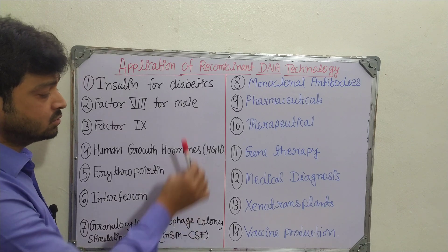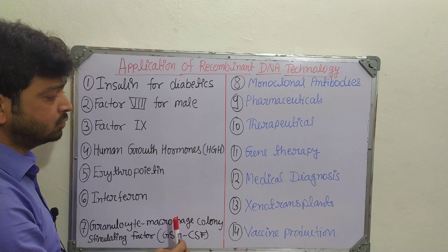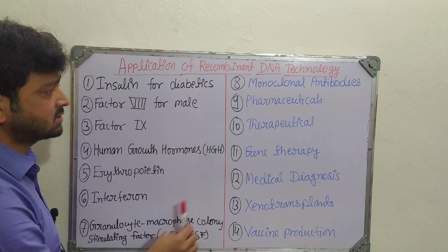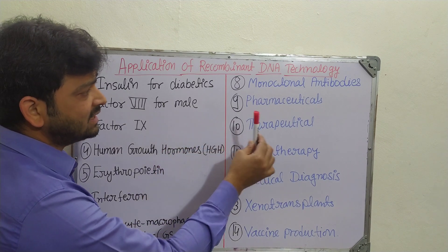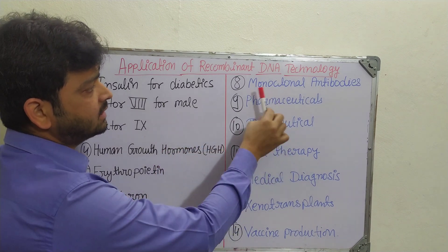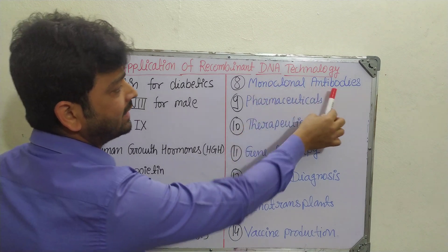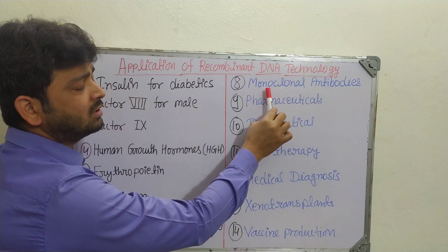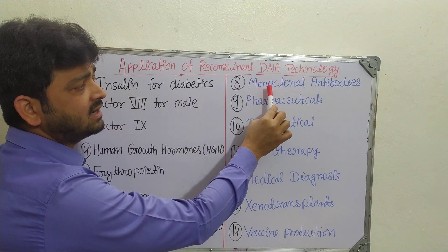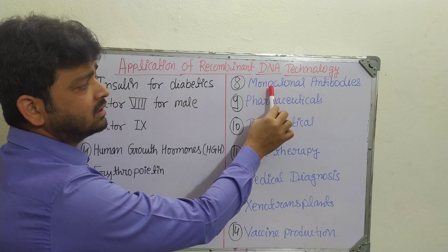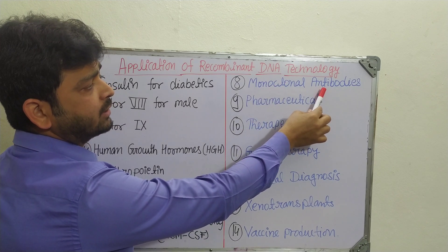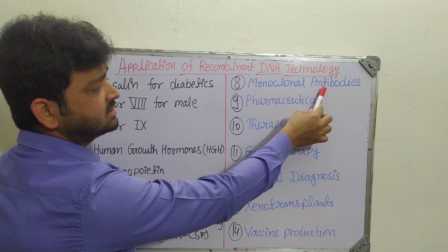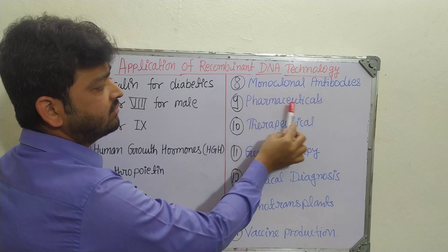All types of hormones and enzymes can be prepared using this technology. Monoclonal antibodies can also be prepared for life-threatening diseases like cancer, where WBCs are cloned and antibodies are produced for particular types of diseases and disorders.